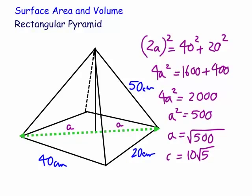We could simplify that to 10 root 5 if we wanted to, but we're going to leave it as the square root of 500 to start with. So we'll write that in as we find these measurements — A equals the square root of 500.